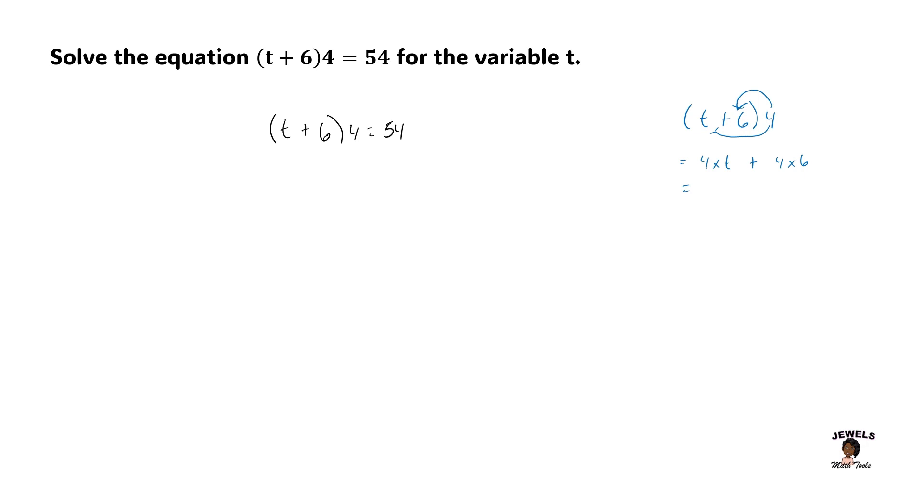4 times t is equal to 4t, and 4 times 6 is equal to 24. So now that we have simplified our parentheses, we are now going to plug this information back into our equation and solve for our unknown variable t. So we have 4t plus 24 equals to 54.